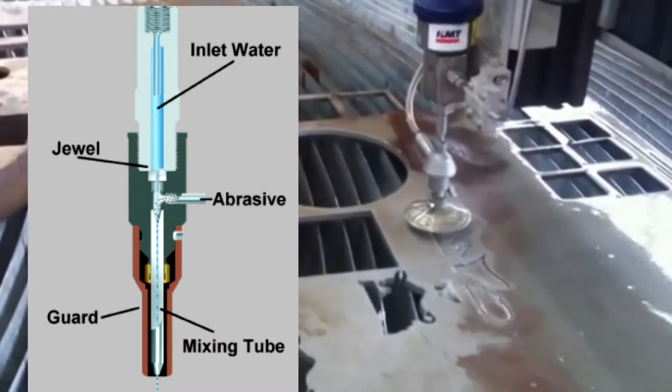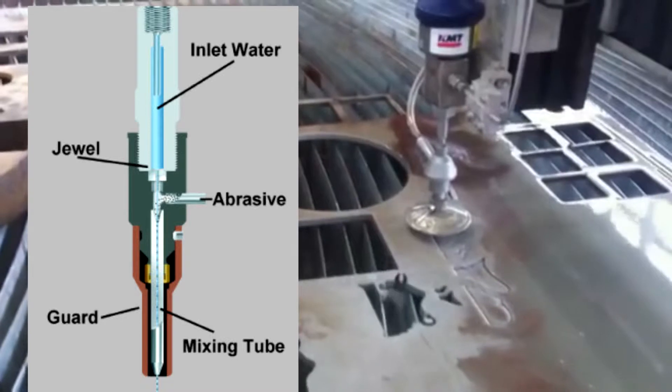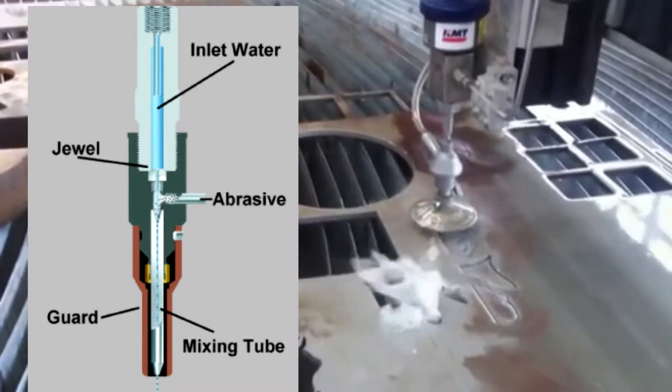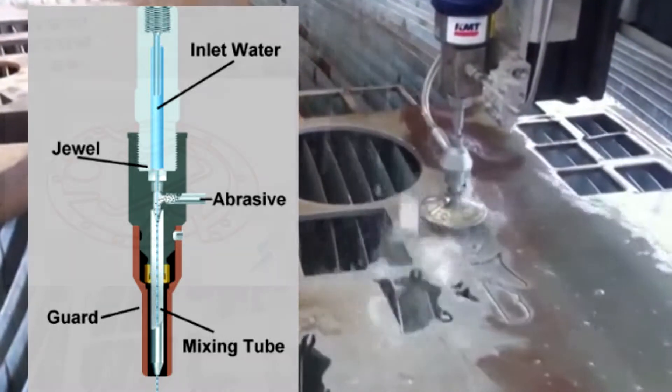These particles are usually aluminum oxide, silicon dioxide, or garnet. The desired particles are added after the water exits the nozzle.